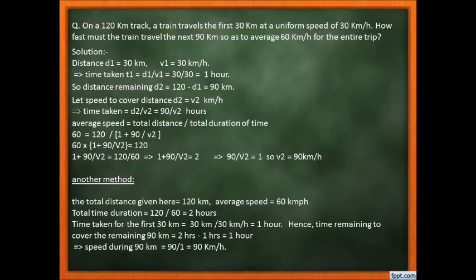After the first 30 km, 90 km remain (120 minus 30). For the next 90 km, at what speed must the train travel so that the overall average speed for the entire journey is 60 km per hour? Let's define: D1 = 30 km, V1 = 30 km/h, so T1 = D1/V1 = 30/30 = 1 hour.